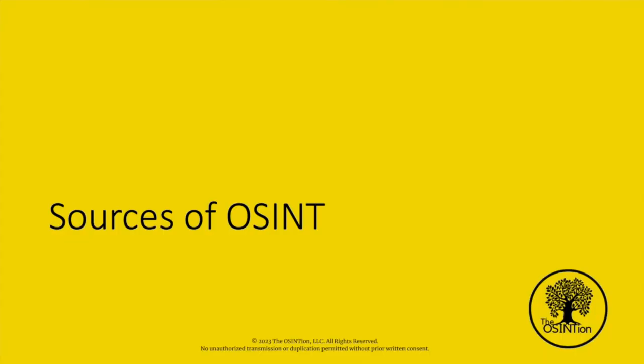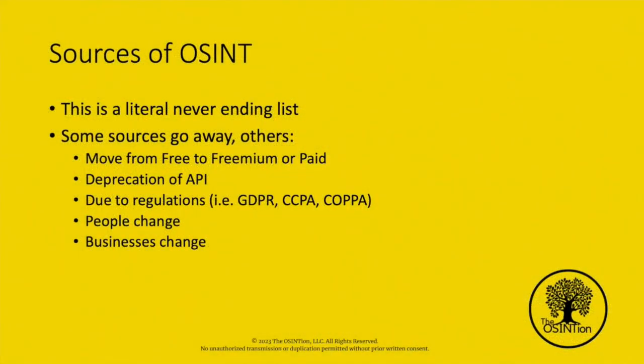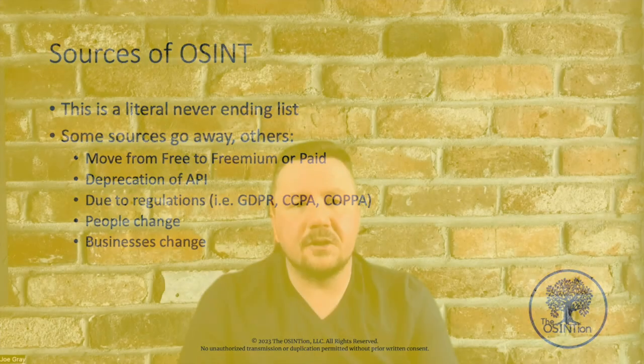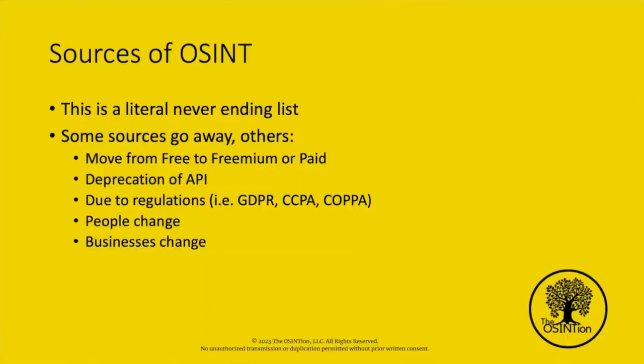Let's talk about sources of OSINT. Think about all the various sources you could possibly think of — it's a long list, and it's literally never ending, because things are always coming up and going away. Some things move from free to freemium or paid. I bought the Pastebin API access on Black Friday, only for them to deprecate the API within six months before I really got to use it.